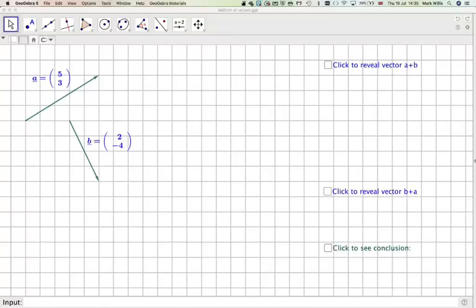Hi, in this video we're going to look at what is known as the addition of vectors. We've got two vectors. We've got this vector A, which is 5, 3. What does that mean? It means for every 5 squares along, we're going to go 3 up. So this is known as a column vector.